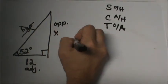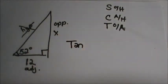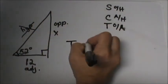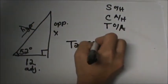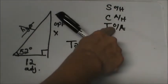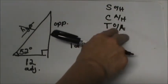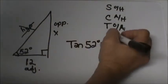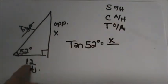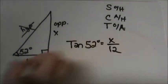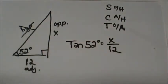So let's set up the tangent of theta. Theta in this case is our reference angle, so we're taking the tangent of 52 degrees, and that's equal to the opposite side over the adjacent side. So now we're going to write a ratio: opposite is x — we don't know that side — adjacent is 12. And that is how we set it up.